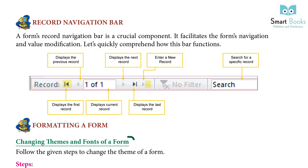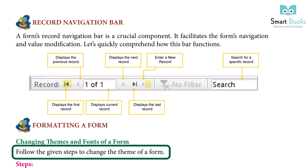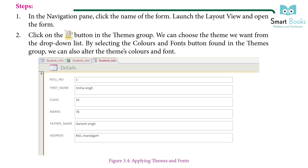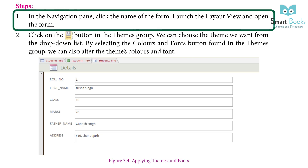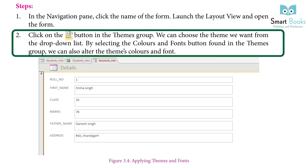Formatting a form — changing themes and fonts. Steps: One, in the navigation pane, click the name of the form, launch Layout View, and open the form. Two, click the Theme button in the Themes group and choose the theme you want from the drop-down list. By selecting the Colors and Fonts button in the Themes group, you can also alter the theme's color and font.